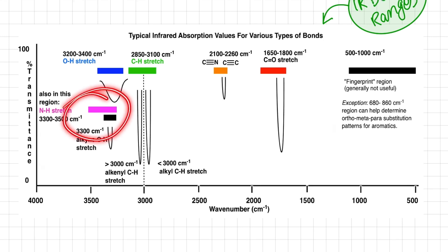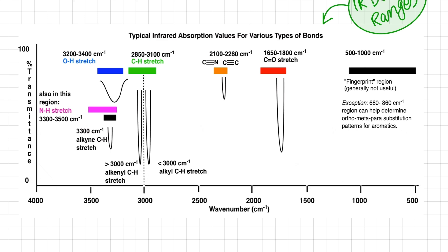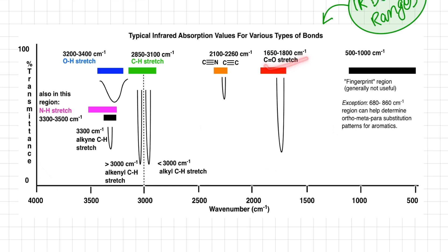The NH stretch lies from 3500 to 3300 per centimeter, and the alkyne C-H stretch has its peak around 3300 per centimeter. Each functional group has its range, and from that we can identify whether a molecule contains that functional group or not. Mainly in this lecture, we are concerned with the carbonyl stretch, which lies from 1800 to 1650 per centimeter.